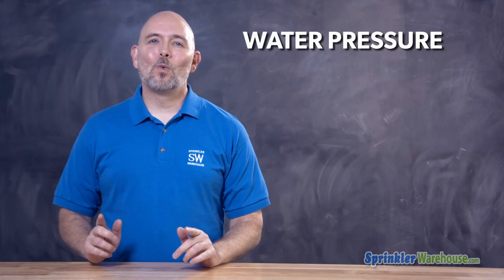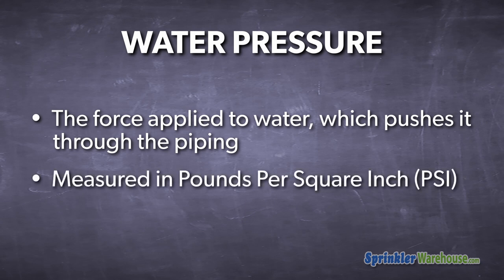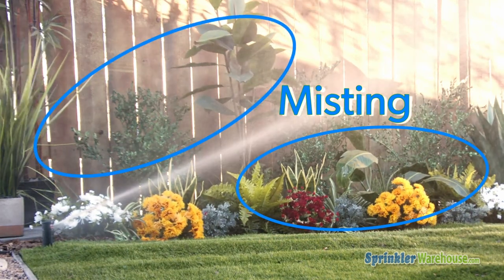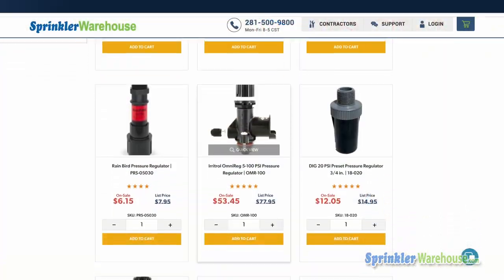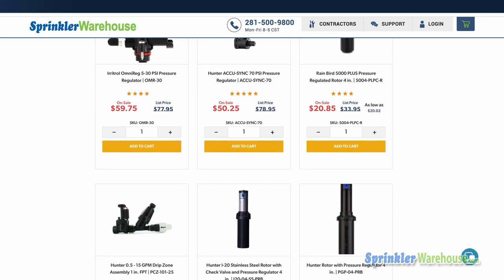First up, water pressure. Water pressure is force applied to water, which pushes it through the piping. Water pressure is measured in PSI — that's pounds per square inch. Too little pressure and your sprinklers won't operate correctly; you'd have to reduce the number of sprinklers operating at once, or use different nozzles to work around that issue. Too much and your sprinklers will mist, which means you'll be wasting water. There are pressure regulators which can be installed in your system to deal with the too-much-pressure issue.